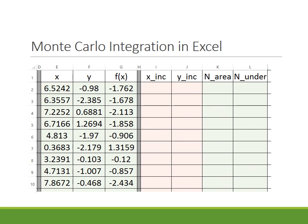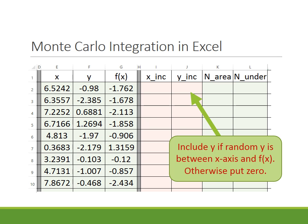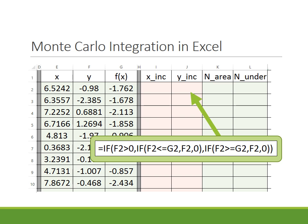Moving over in the template, I have additional columns for X and Y values included in my area calculation. For the Y column, I include a random Y value if it's between the X-axis and the function, otherwise zero. The formula counts a positive Y if it's less than the function value, and counts a negative Y if it's greater than the function value — only including points between the X-axis and the function.